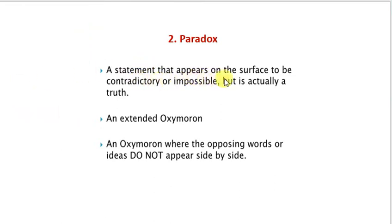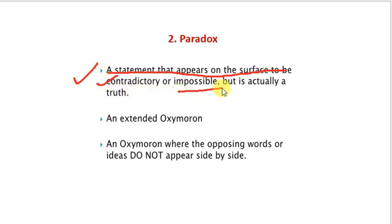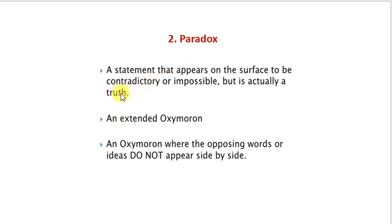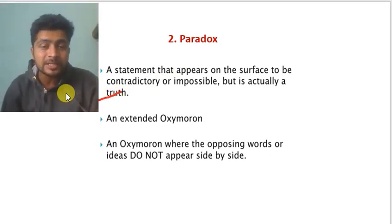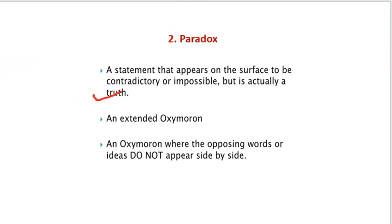Paradox is a statement that appears on the surface to be contradictory or impossible, but it is actually a truth. It is a statement that appears contradictory and impossible, but in actual fact it holds some truth. For example: 'He is wise and dull.' Wise means clever and dull means unintelligent — these are opposite, unbelievable ideas, but to some extent they can be true. That is called paradox.